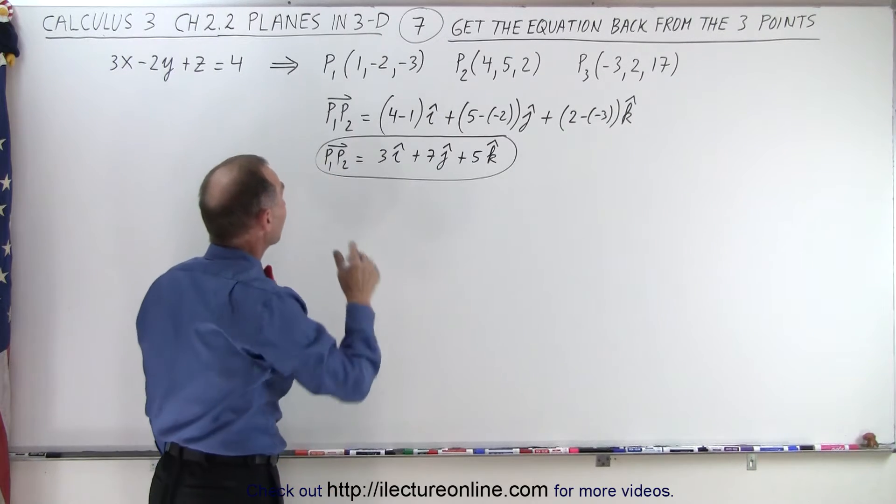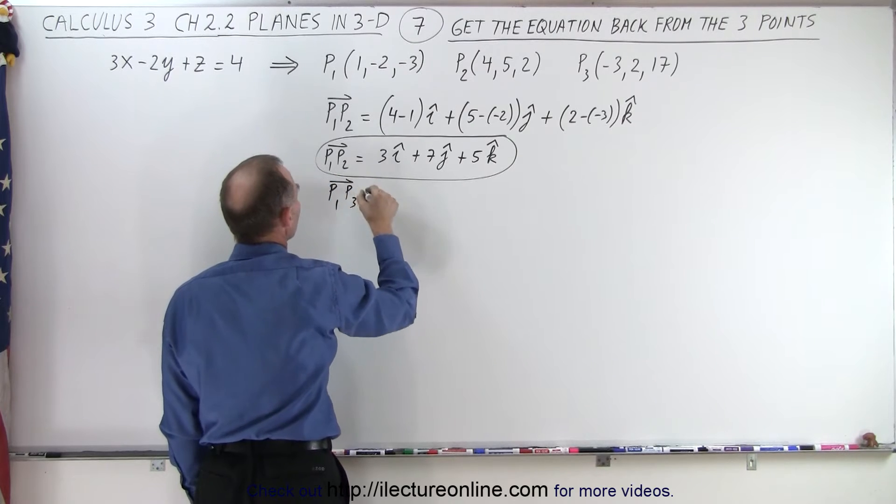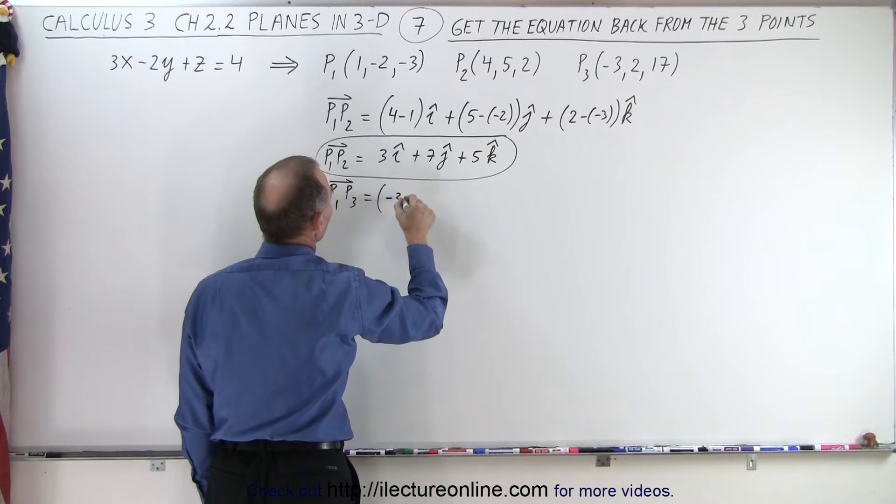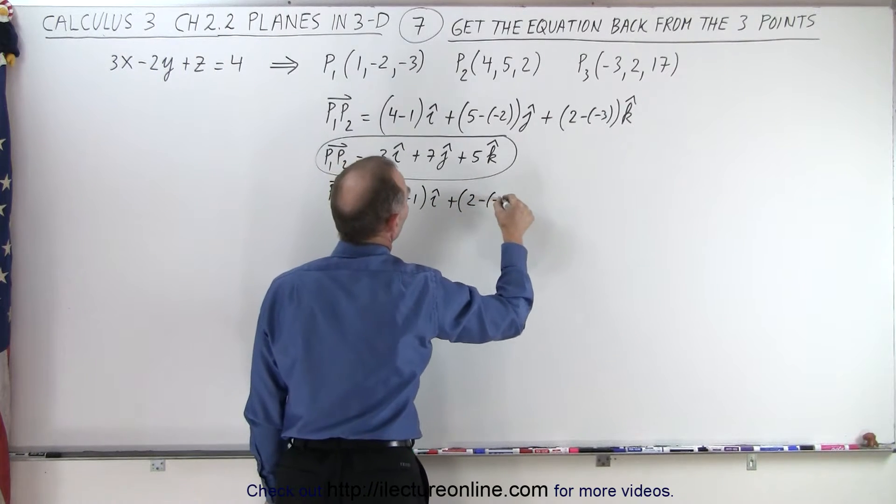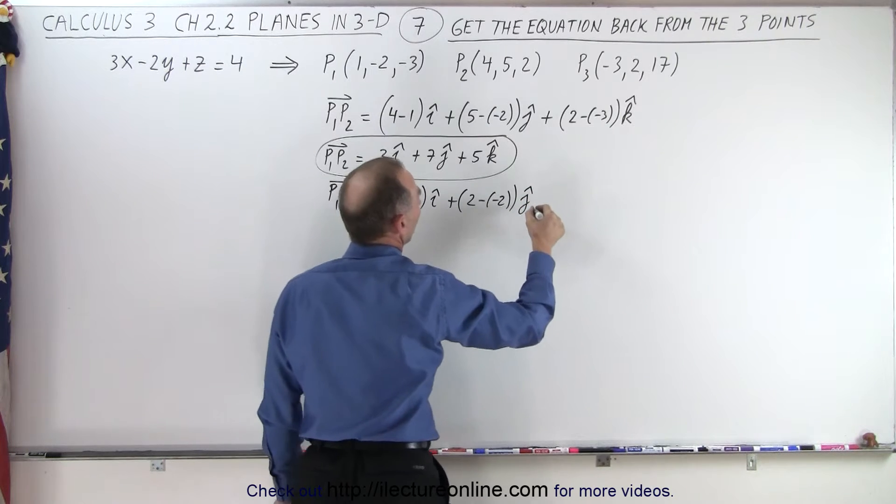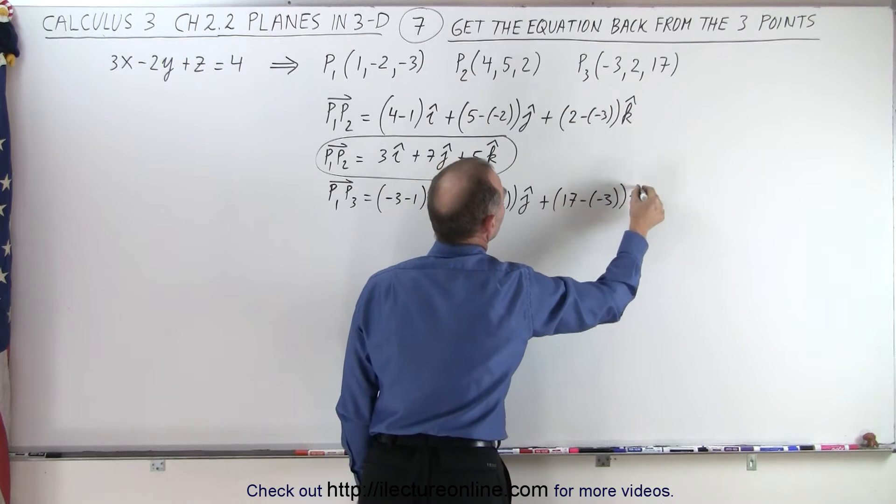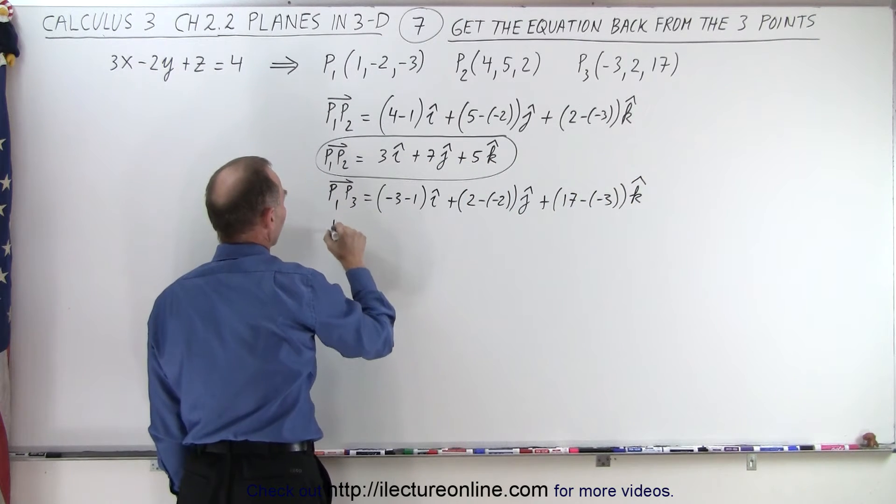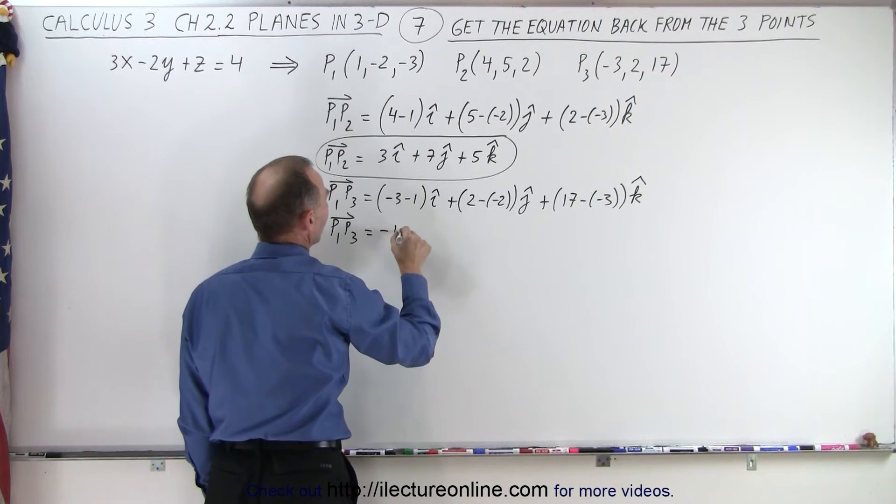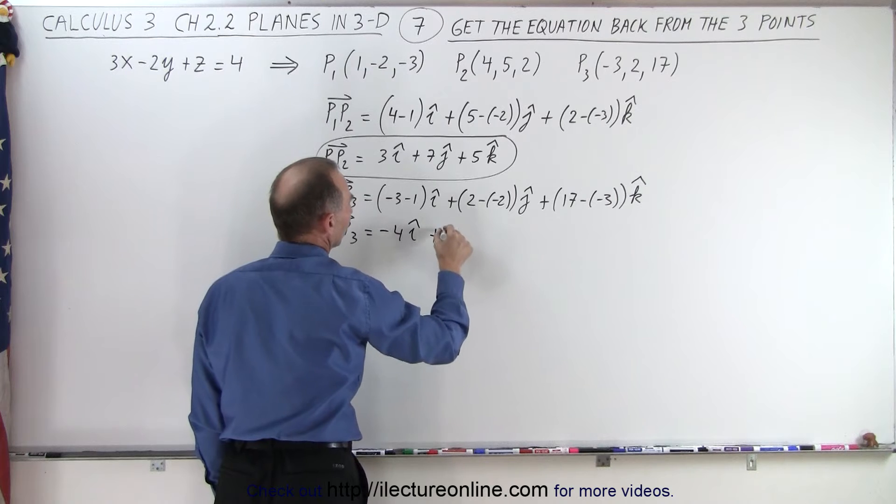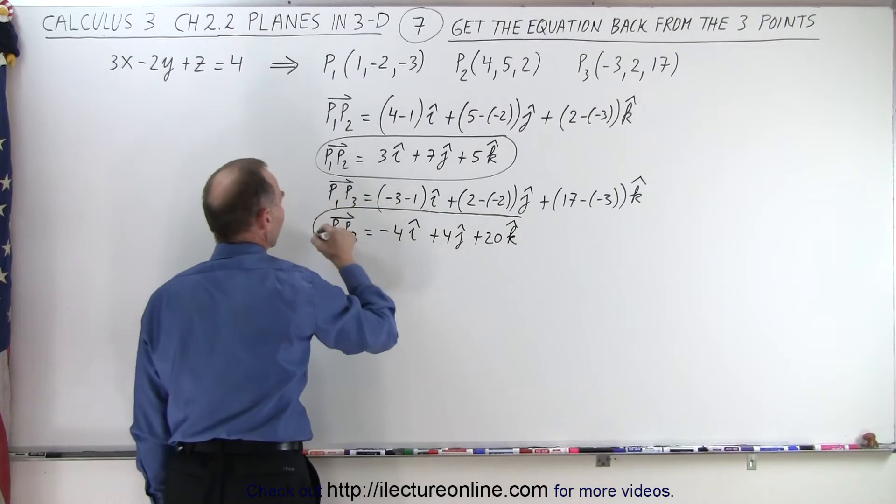Now we need the second vector from P1 to P3. So from P1 to P3, that is equal to negative 3 minus 1 in the i-direction, plus 2 minus a minus 2 in the j-direction, and plus 17 minus a minus 3 in the k-direction. Simplifying that, the vector P1 to P3 is going to be equal to minus 4 in the i-direction, plus 4 in the j-direction, and plus 20 in the k-direction. So there's our second vector.